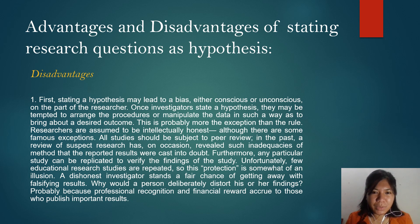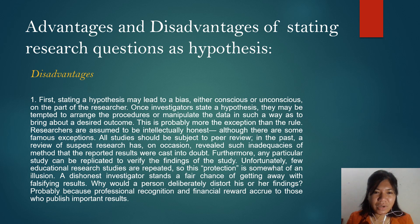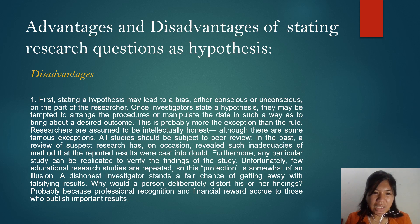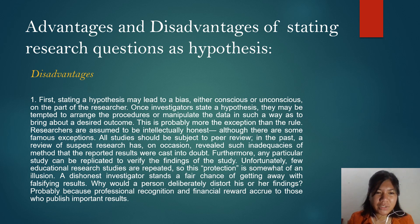All studies should be subject to peer review. Review of suspect research has on occasion revealed such inadequacies of method that the reported results were cast into doubt. Furthermore, any particular study can be replicated to verify the findings. Unfortunately, few educational research studies are repeated, so this protection is somewhat of an illusion. A dishonest investigator stands a fair chance of getting away with falsifying results. Why would a person deliberately distort findings? Probably because professional recognition and financial reward accrue to those who publish important results.